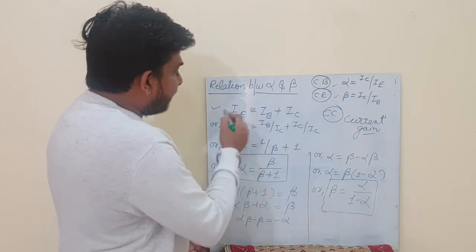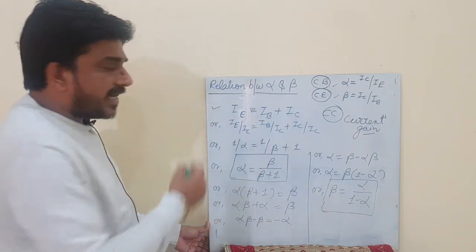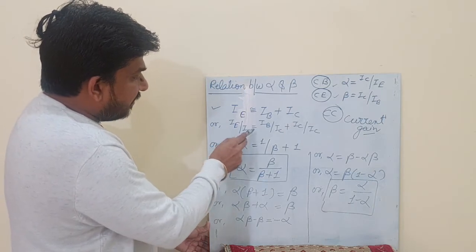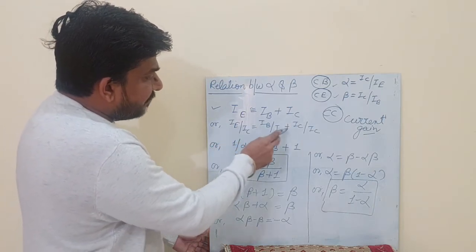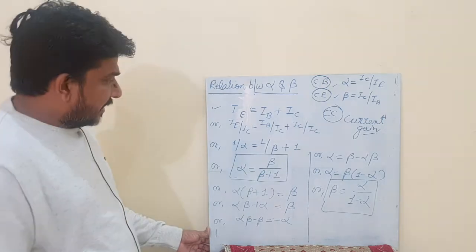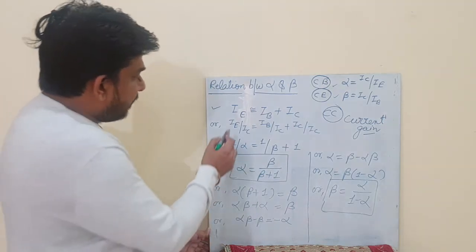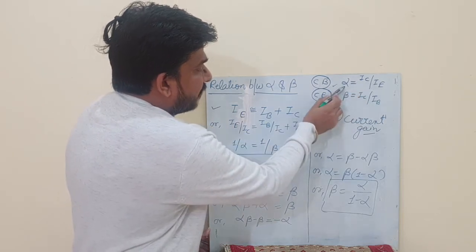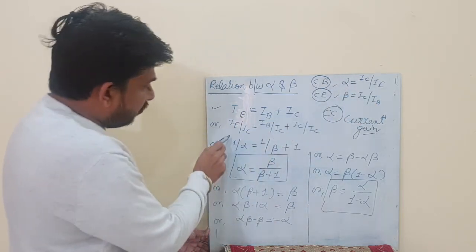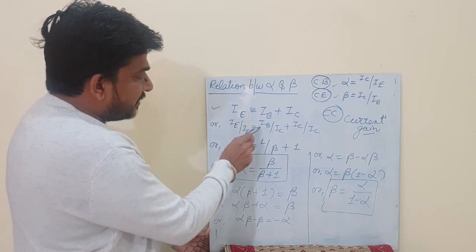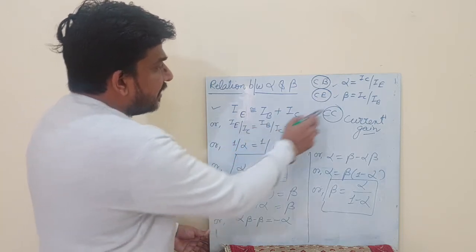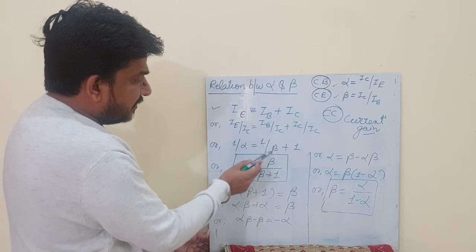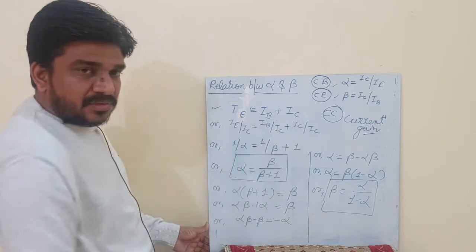Now what we will do? We are dividing this equation by IC on both sides. So this becomes IE upon IC equals IB upon IC plus IC upon IC. When you see IE upon IC, since IC upon IE is alpha, then IE upon IC equals 1 upon alpha. Same thing here: since IC upon IB is beta, IB upon IC equals 1 upon beta, plus IC upon IC equals 1.